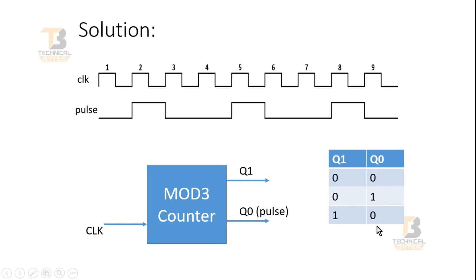Now see the output Q0. It is 0 first. Then goes to 1, which is just aligned with our pulse signal. Then it goes 0 in the third clock cycle. In the fourth clock cycle, again it is 0 after rollback. And the fifth clock cycle, it is 1, which is matching exactly with the pulse signal behavior. So if we can consider this Q0 as a pulse signal, that is our answer.